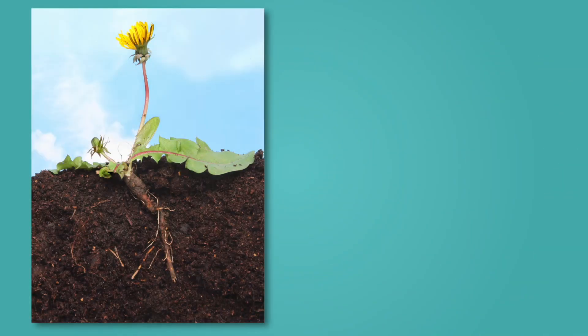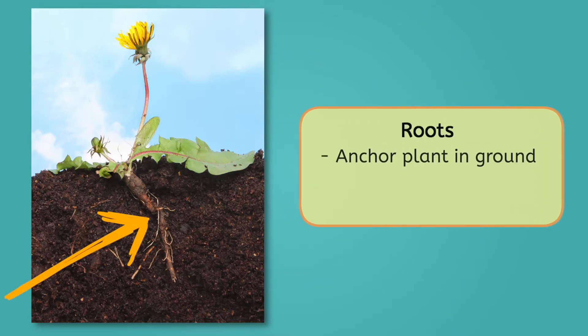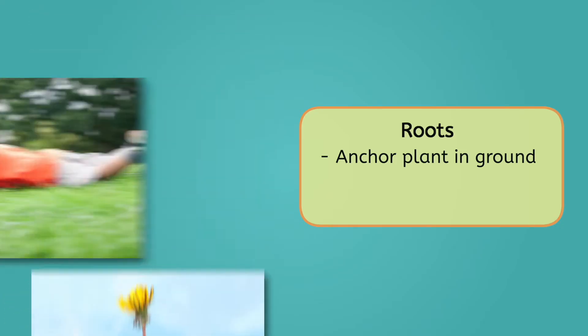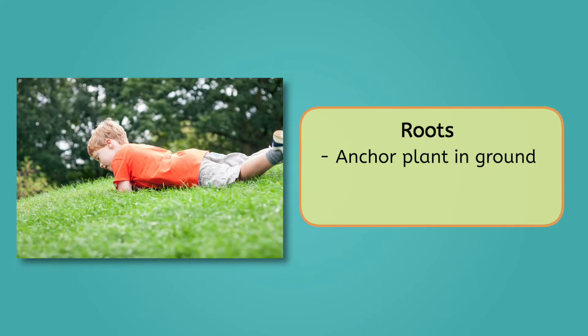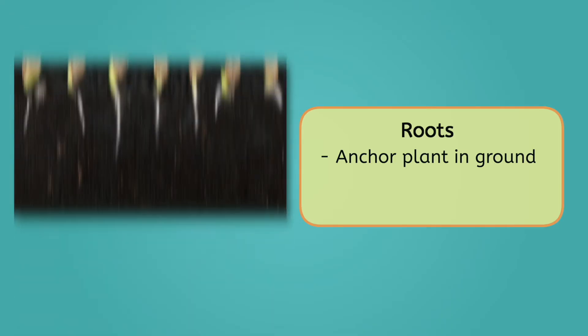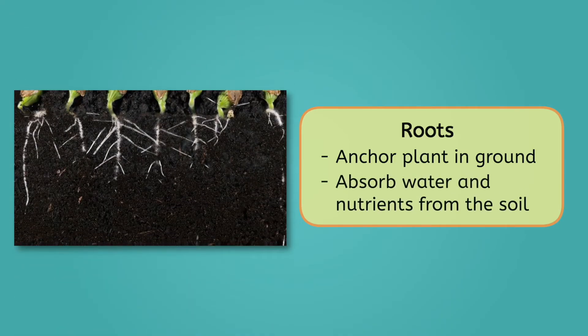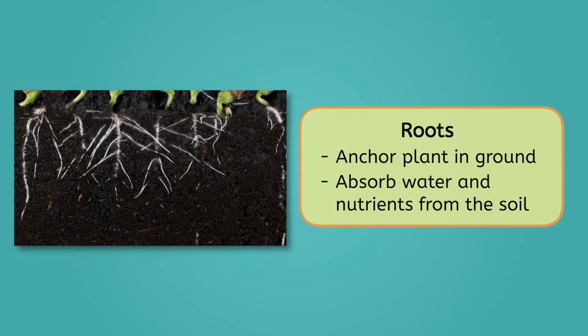Let's start with the base. If you've ever been tasked with pulling weeds from the ground, you probably noticed the roots. Roots anchor a plant to the ground so it doesn't get displaced by weather, passing animals, or even a good roll down a hill. But that's not all they do — roots act like a sponge, absorbing water and nutrients from the soil.